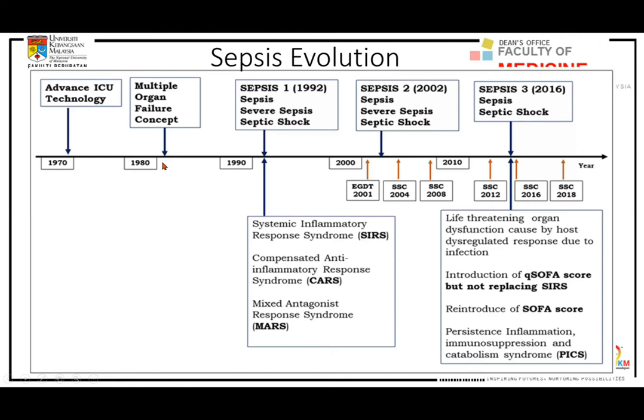There is also the introduction of PICS — Persistent Inflammatory Immunosuppressed and Catabolic Syndrome — which occurs when ICU technology is so advanced that patient life support is so good that a patient can develop PICS syndrome. I will explain more about this syndrome later.